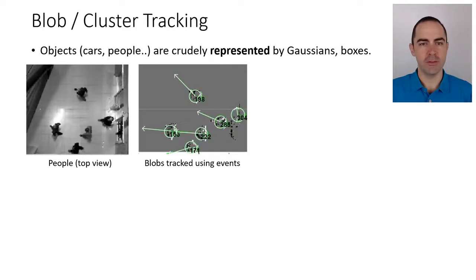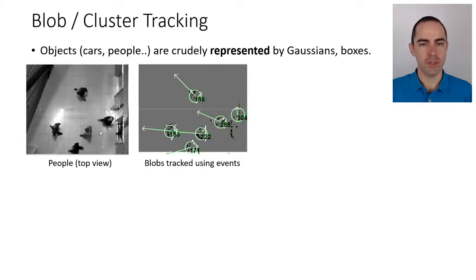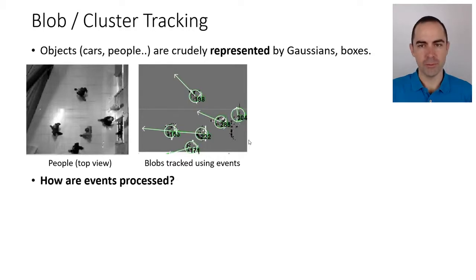This approach can be used for surveillance, where objects are crudely represented by Gaussians or boxes. On the left, you can see a top-view image of a corridor with people moving. On the right, you see a grayscale representation of the events — positive events in white, negative events in dark — along with the different trackers, their IDs, and the velocity and direction in which each object is moving.